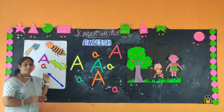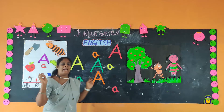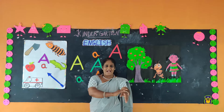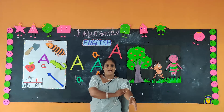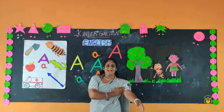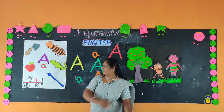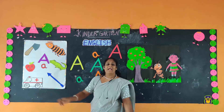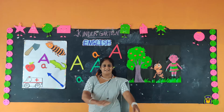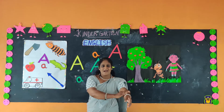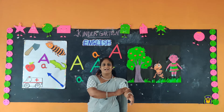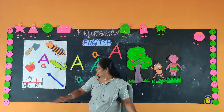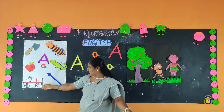Then what is this? Apple. Ah, ah — apple. Very good. Next, alligator. Ah, ah — alligator. Then what is this?